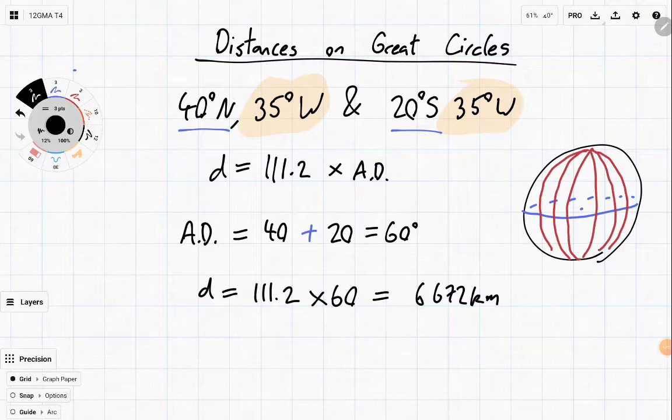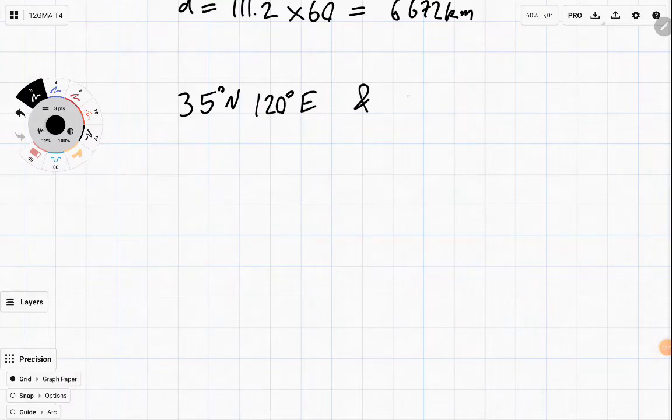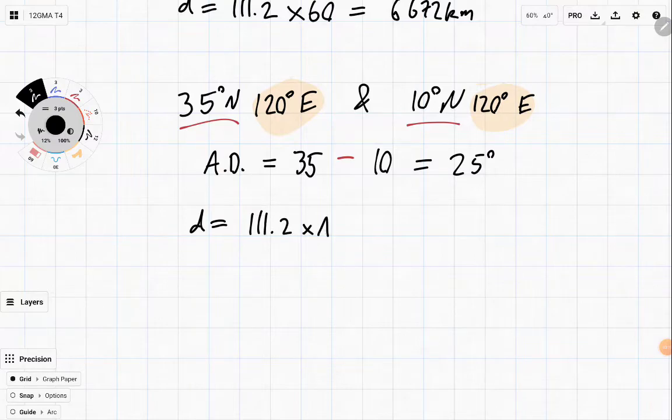So that's the distance between these two locations, place A and place B. Let's have a look at another one. What if instead I had 35 degrees north, 120 degrees east, and 10 degrees north, 120 degrees east? Well, once again, the match is in between the second thing. Since they're the same, they're both north, I'm going to be subtracting. So it's going to be AD is equal to 35 minus 10, 25 degrees. And distance is equal to 111.2 times AD. 111.2 times 25 equals 2,780 kilometres.